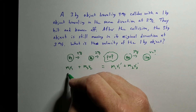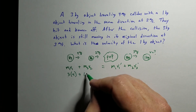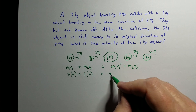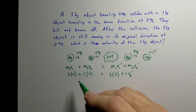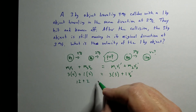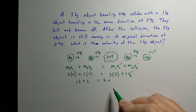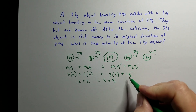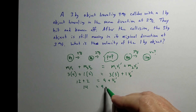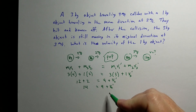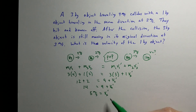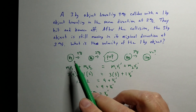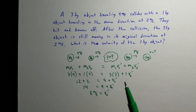Dropping numbers into the elastic collision equation: 3×4 + 1×2 = 3×3 + 1×v₂'. That gives 12 + 2 = 9 + v₂', so 14 = 9 + v₂'. Subtracting 9 from both sides gives v₂' = 5 m/s. Since the answer is positive, the 1 kg object is going to the right at 5 m/s after the collision. You can also verify this by checking that the total kinetic energy before equals the total kinetic energy after.